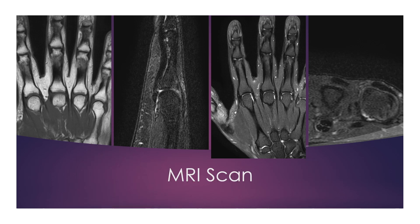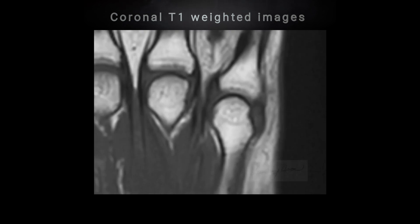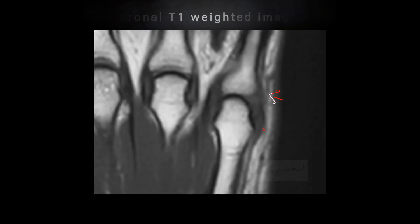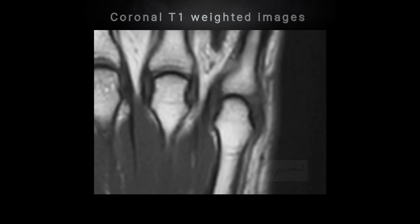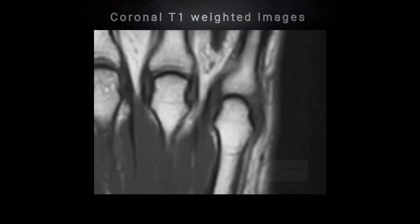MRI scan, coronal T1-weighted image. I am going to move from dorsal side to palmar side. There is thickening of the ulnar collateral ligament of the fifth metacarpophalangeal joint. In the middle of the ulnar collateral ligament, there is a focal dimpling. This means the loosening of consistency of the ligament.